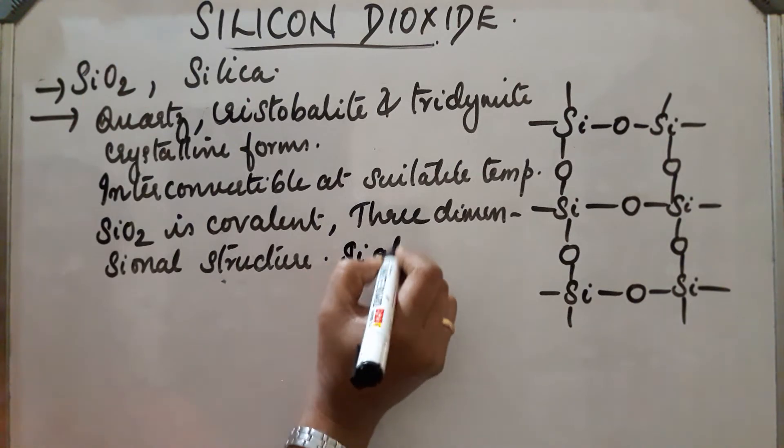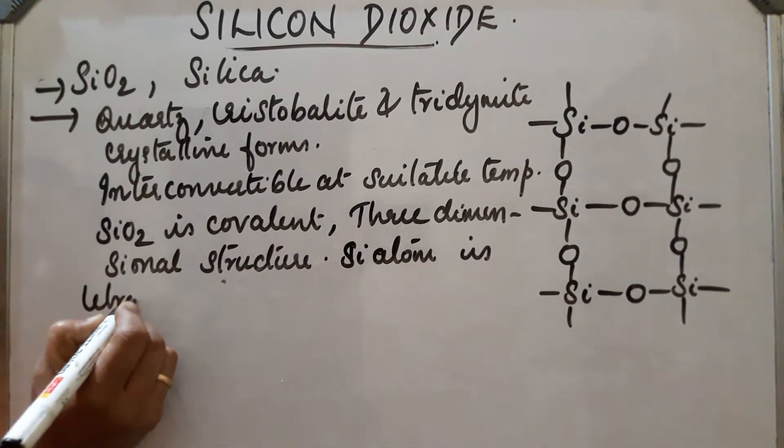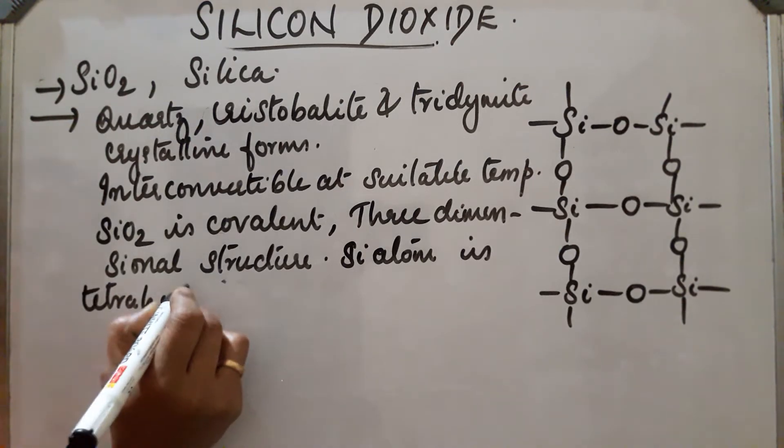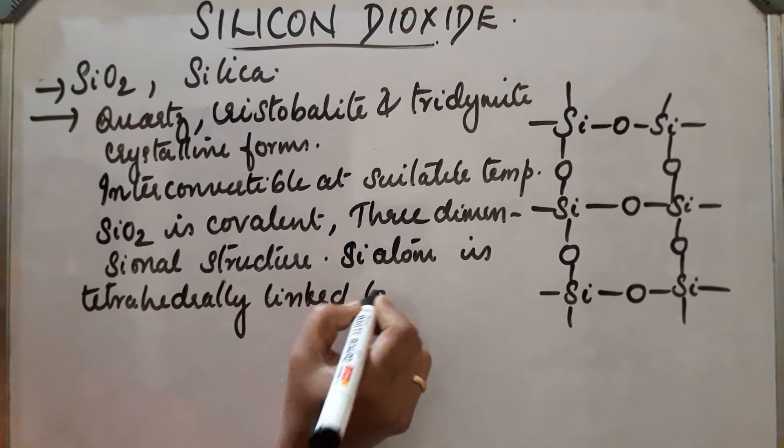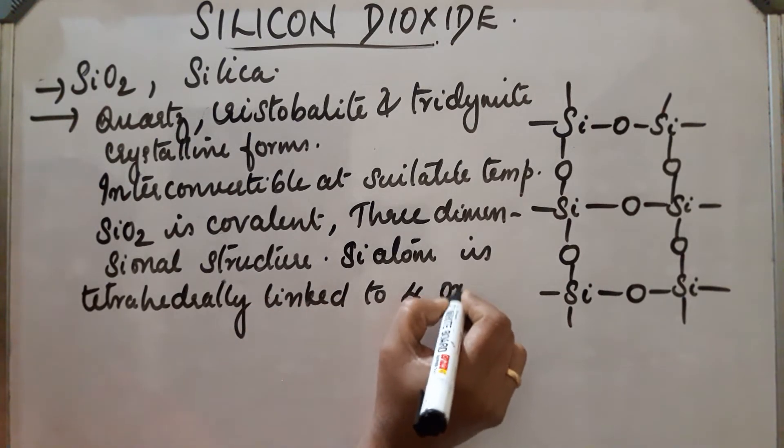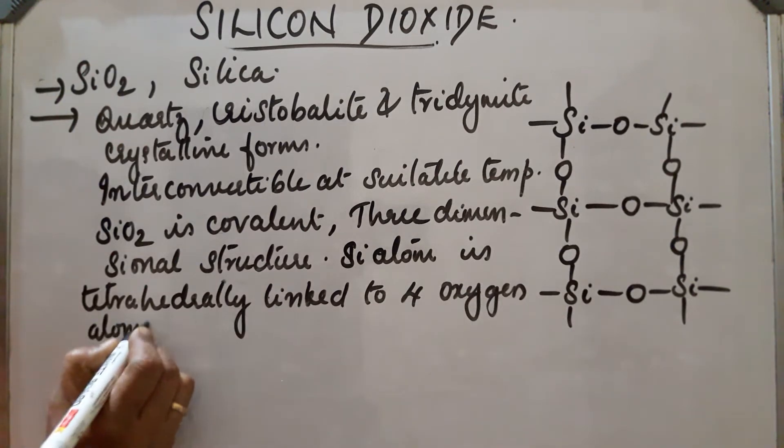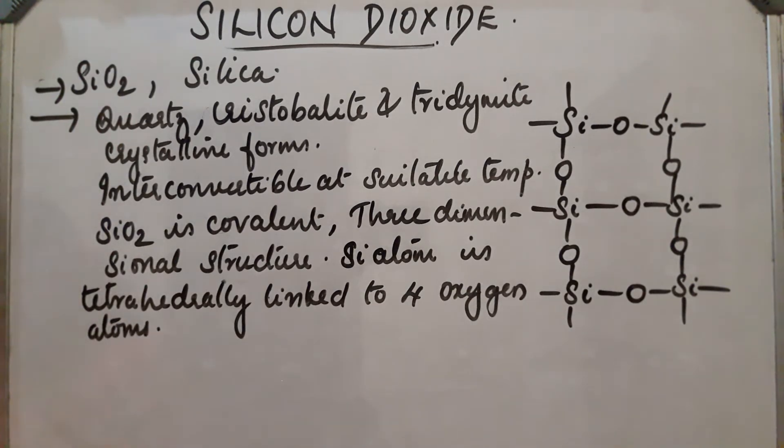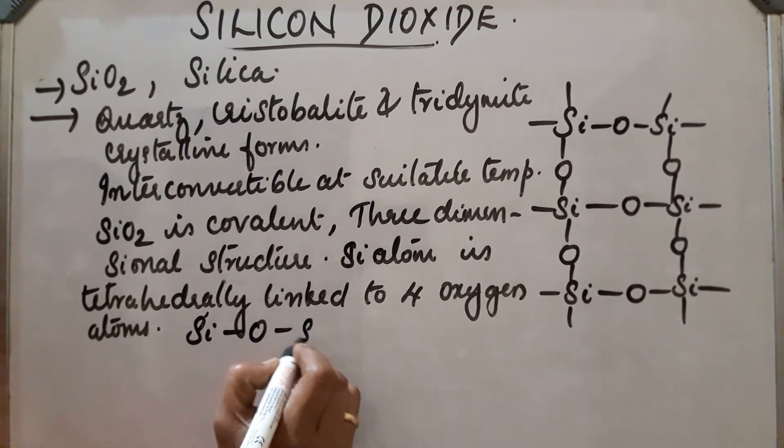Si atom is tetrahedrally linked to four oxygen atoms, and each oxygen atom is bonded to two Si atoms on two sides, so it forms Si-O-Si bonds.